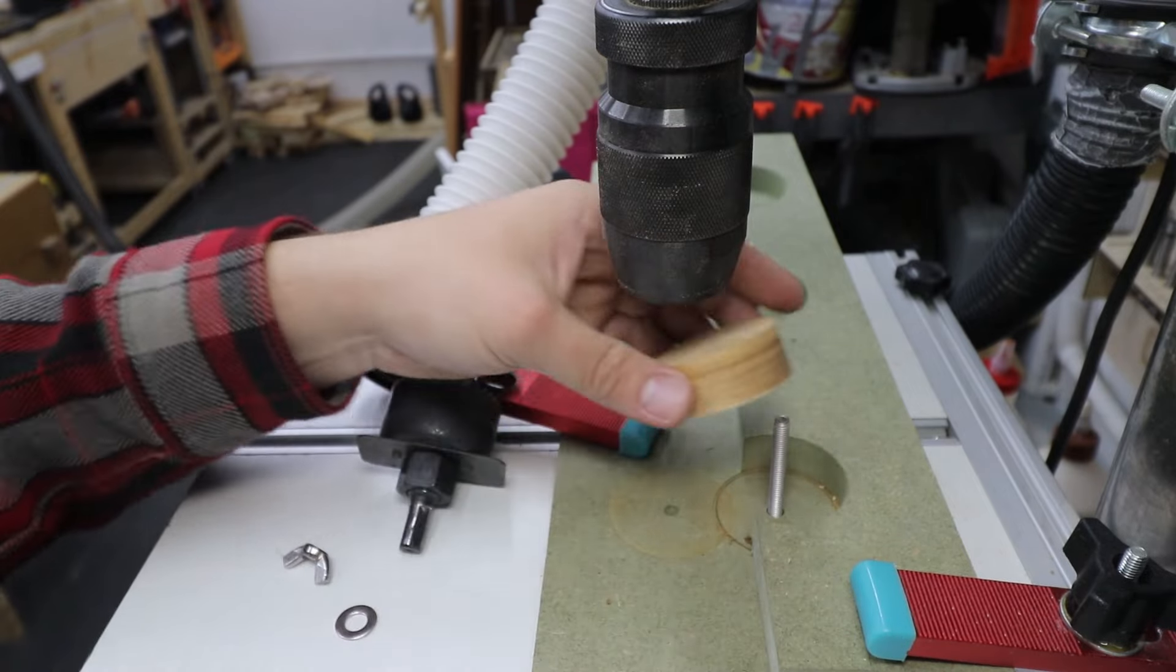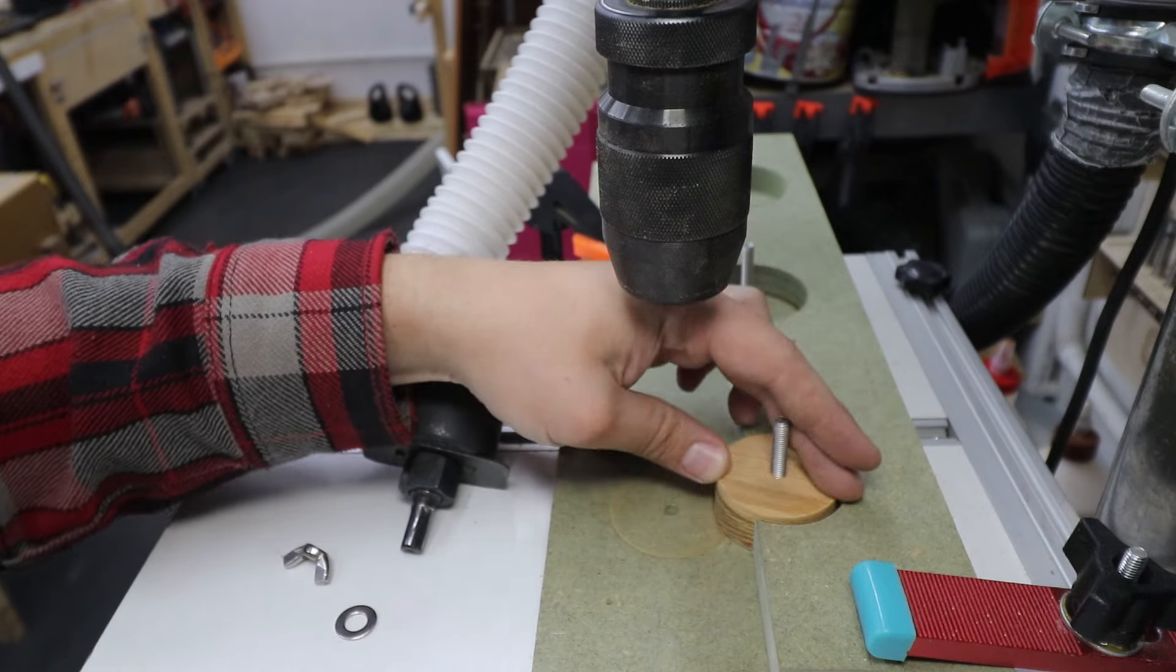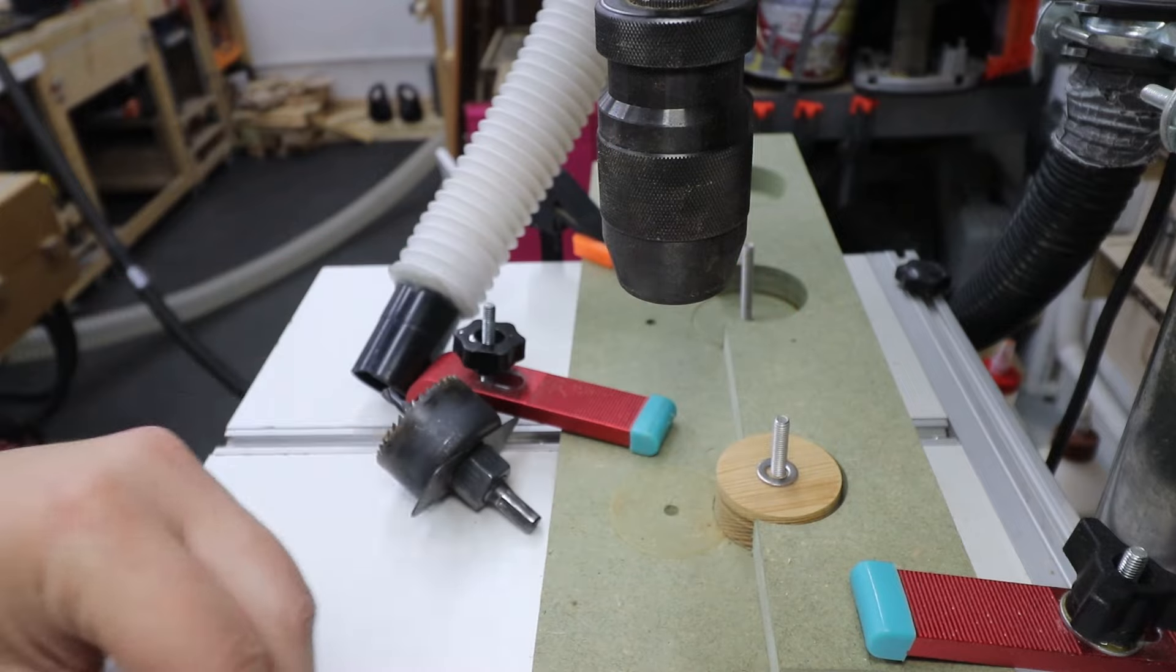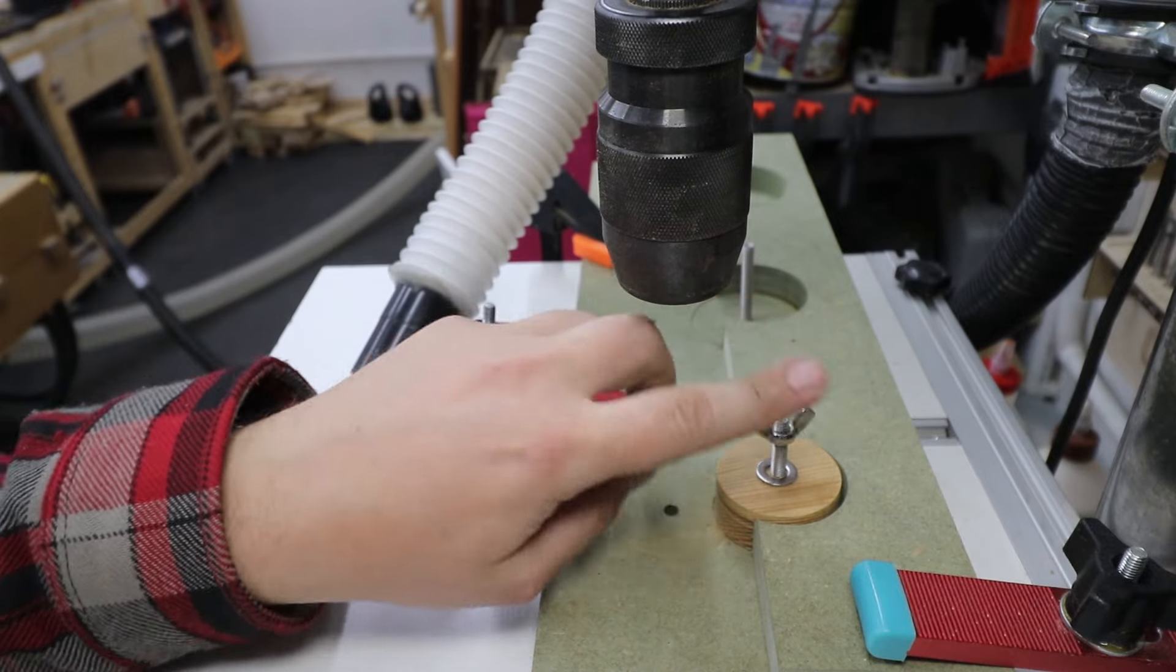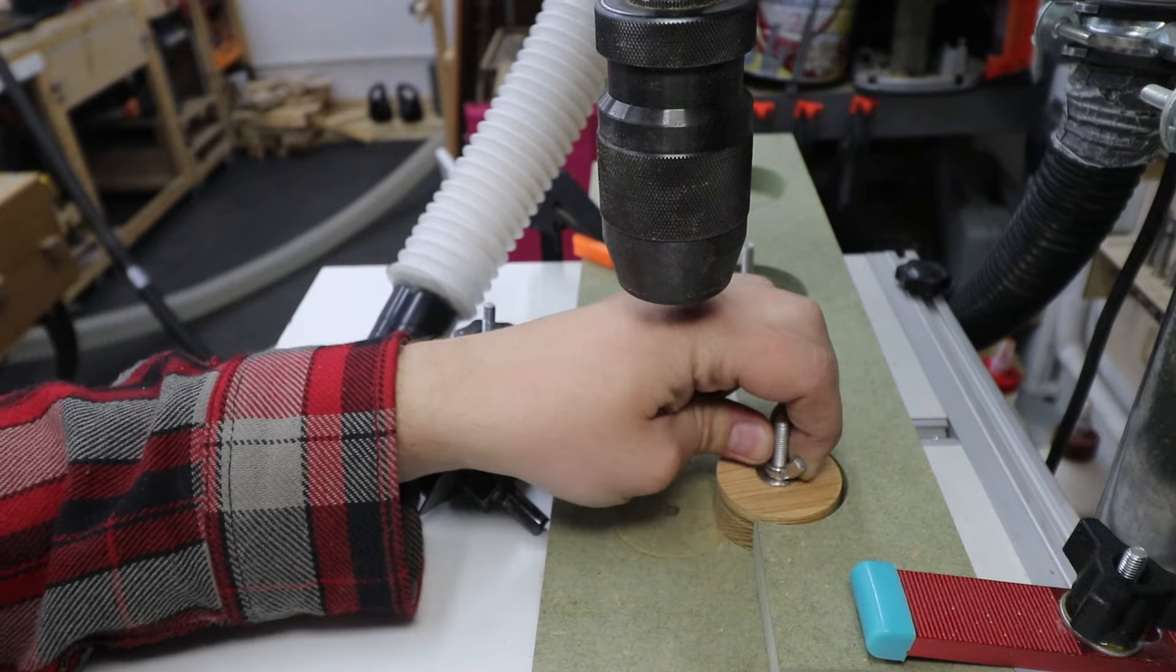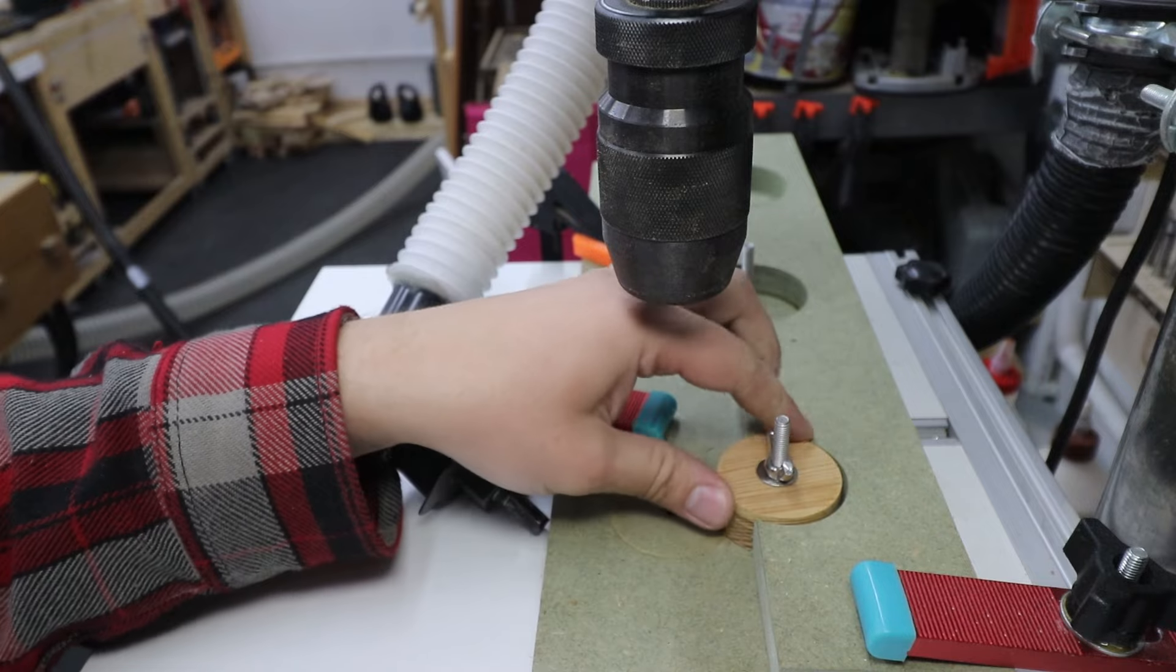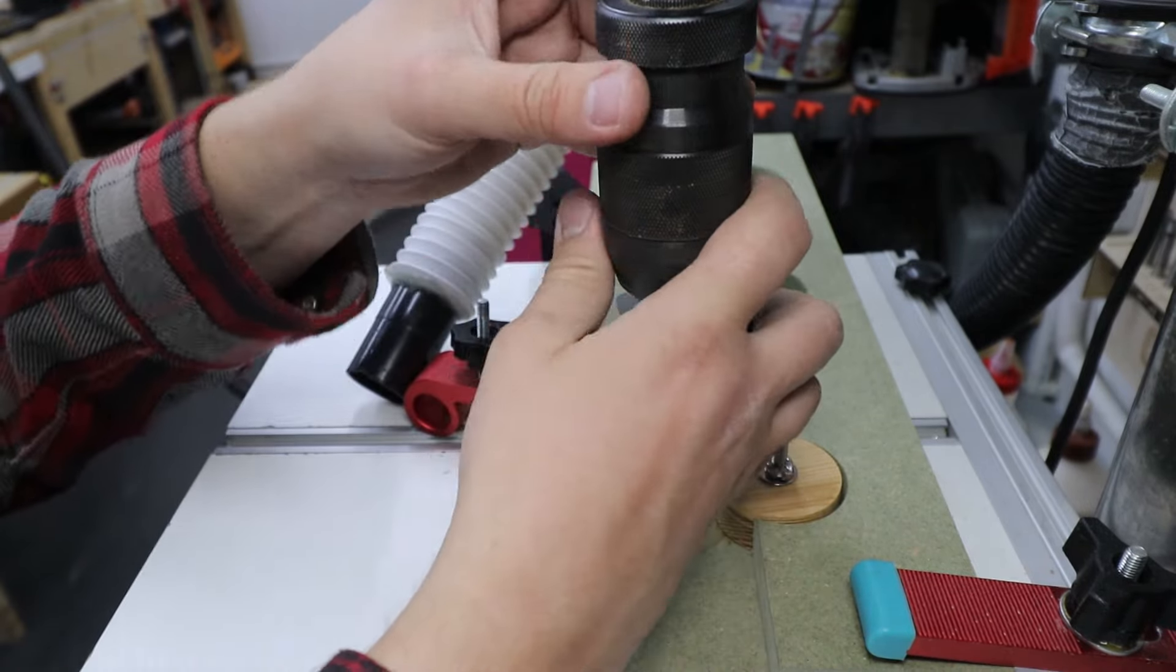This circle, this biscuit, goes just over here on that bolt. Then you need to put a washer on top and a wing nut. Make sure it's tight so it's not going to move on you.